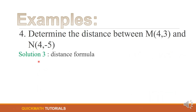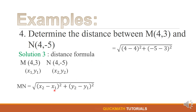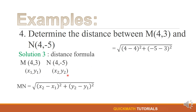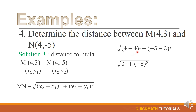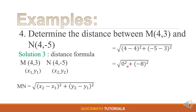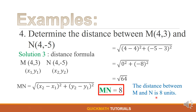For solution number 3, using the distance formula by substitution: x sub 2 is 4, x sub 1 is 4, y sub 2 is negative 5, and y sub 1 is 3. 4 minus 4 is 0. Negative 5 minus 3 gives negative 8. 0 squared plus negative 8 squared is 64, and the square root of 64 is 8. Therefore, the distance between M and N is 8 units.